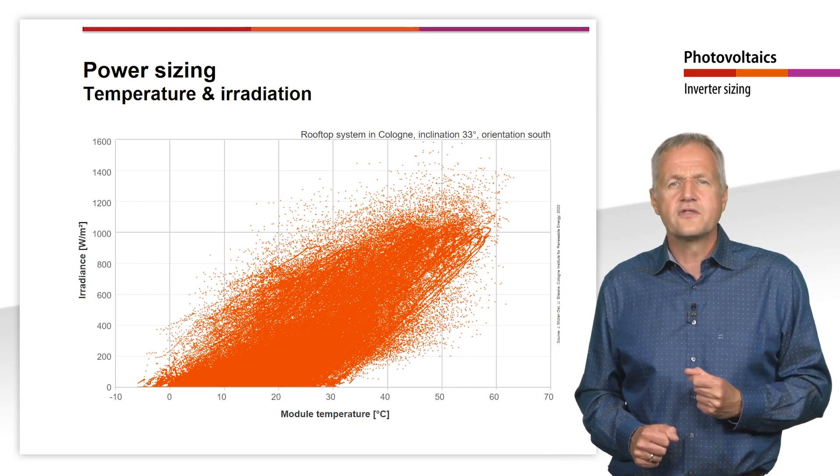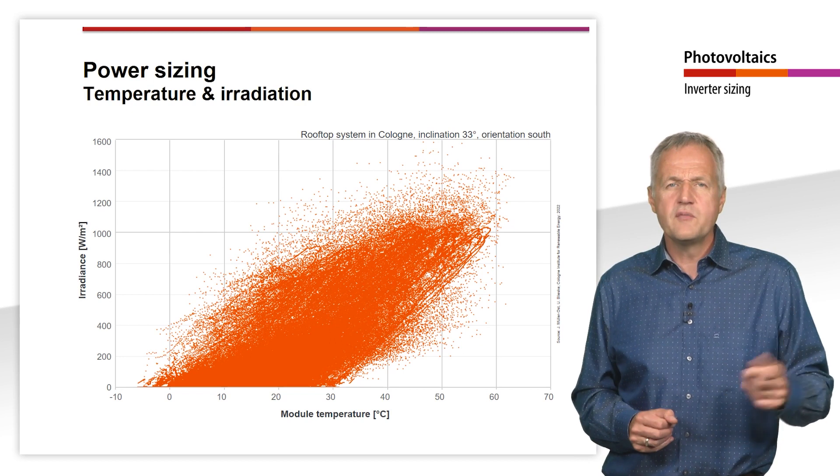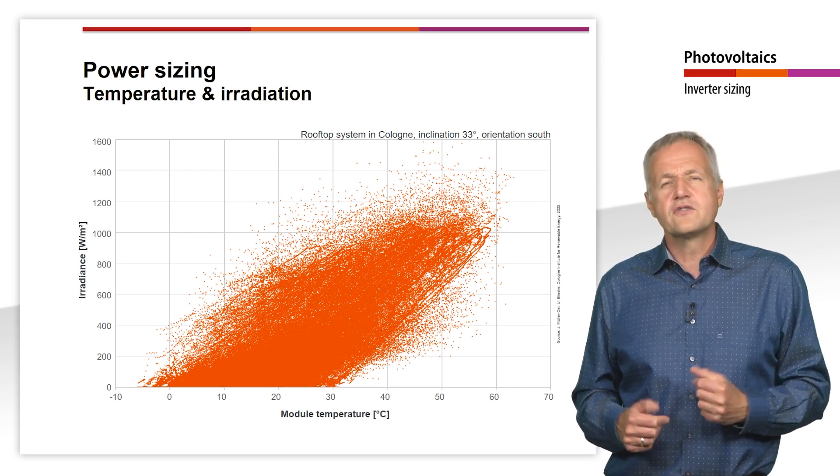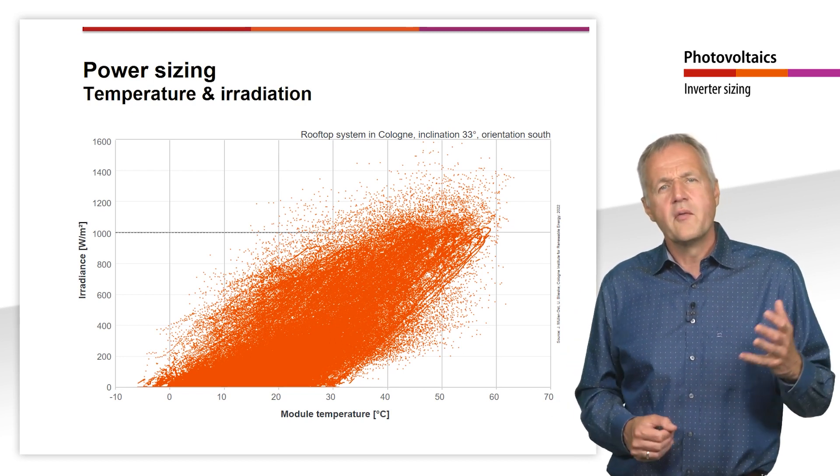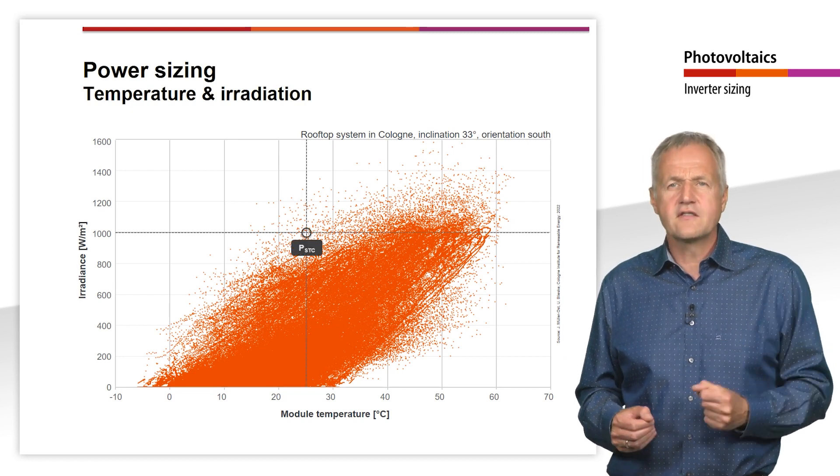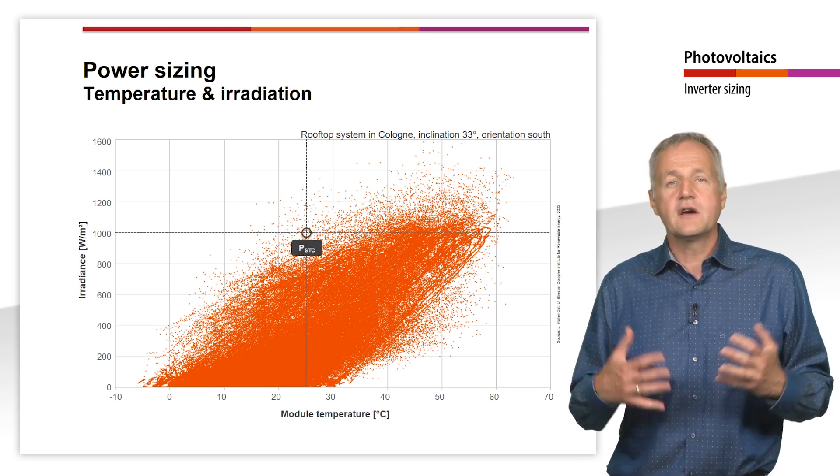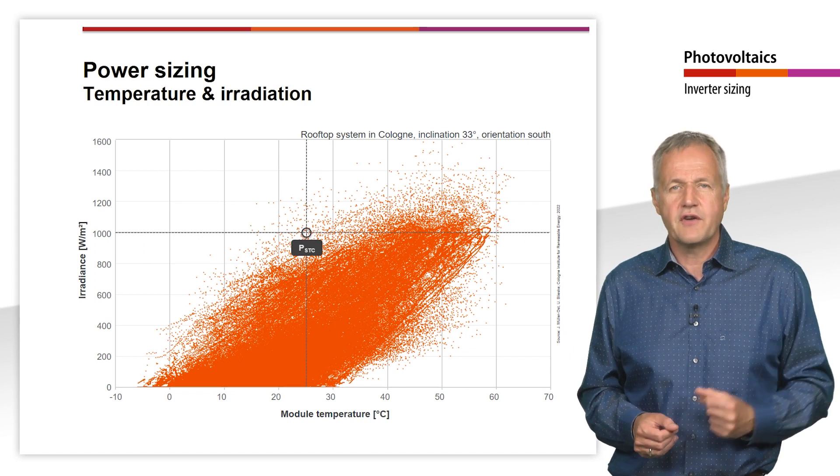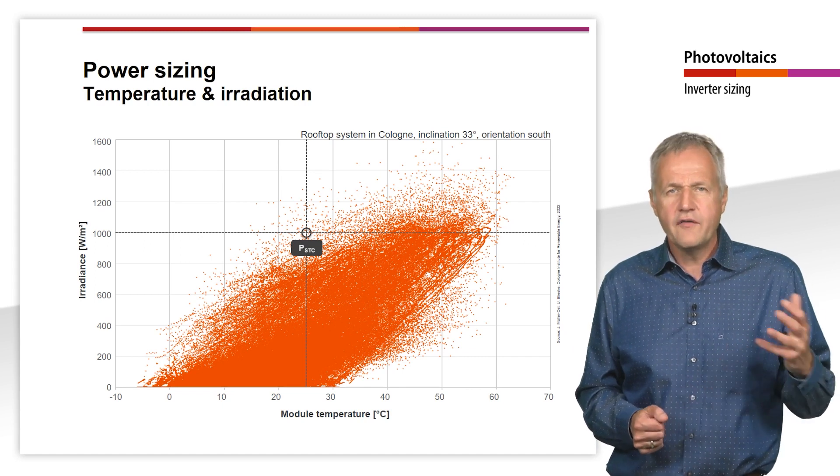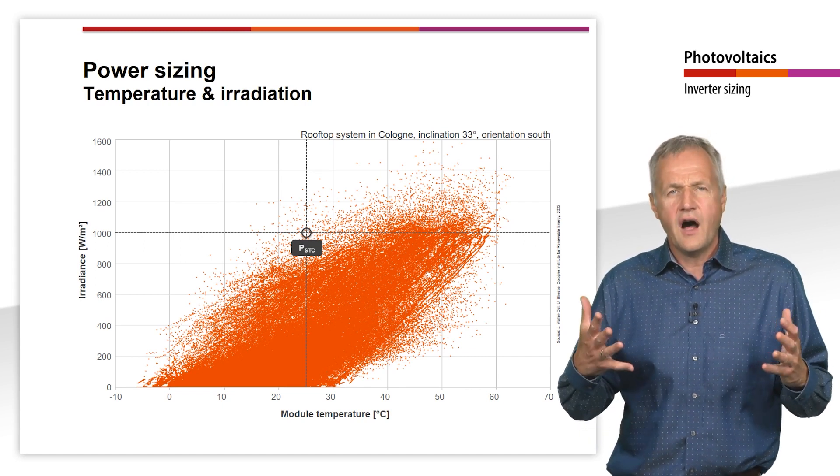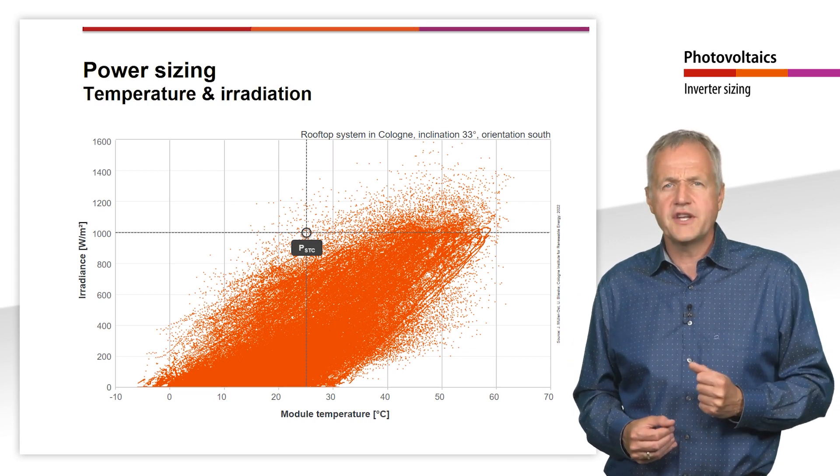Let us first consider the rated power of a PV module. This always refers to standard test conditions, mainly an irradiance of 1000 W per square meter and a module temperature of 25 degrees Celsius. However, these conditions hardly ever occur in normal operation.